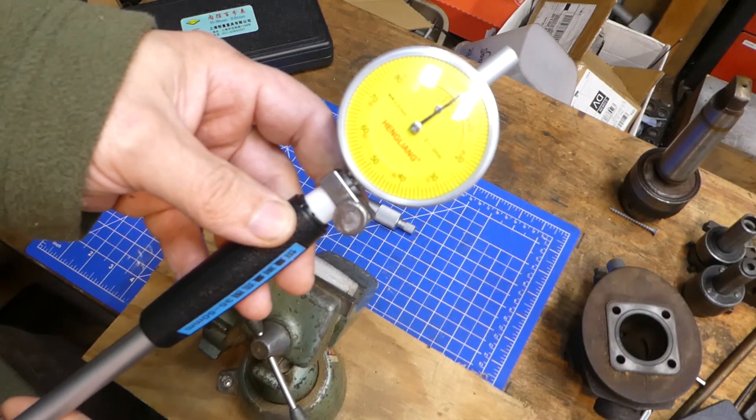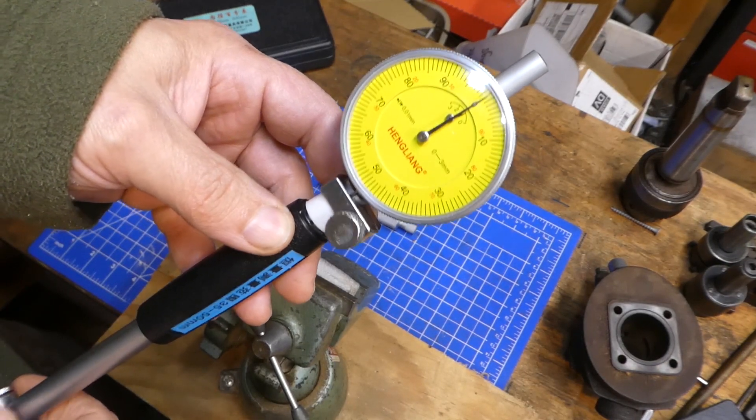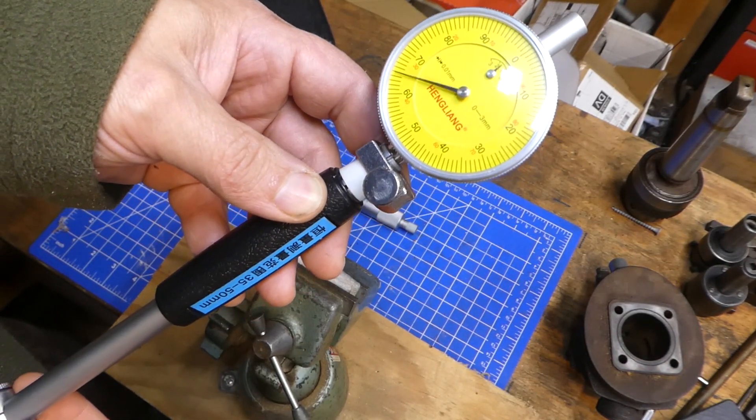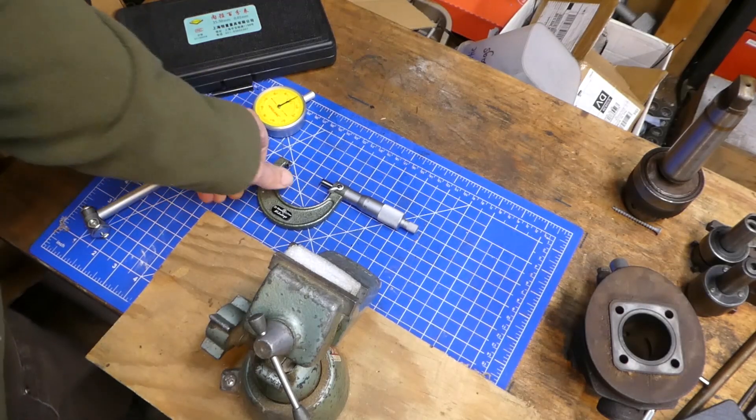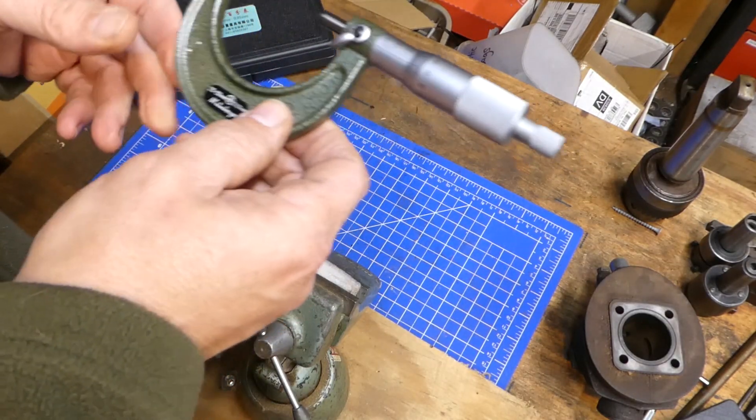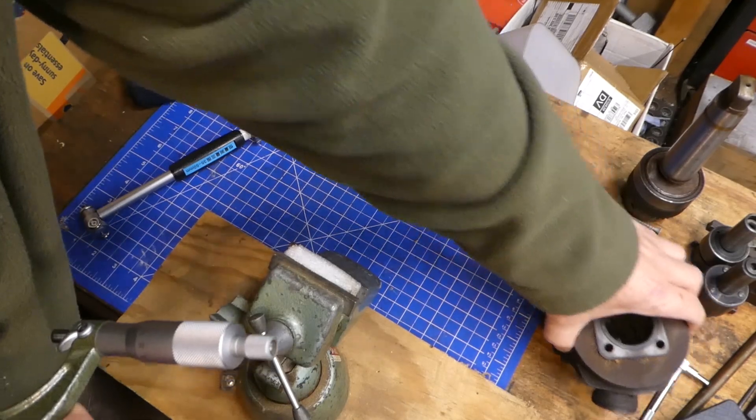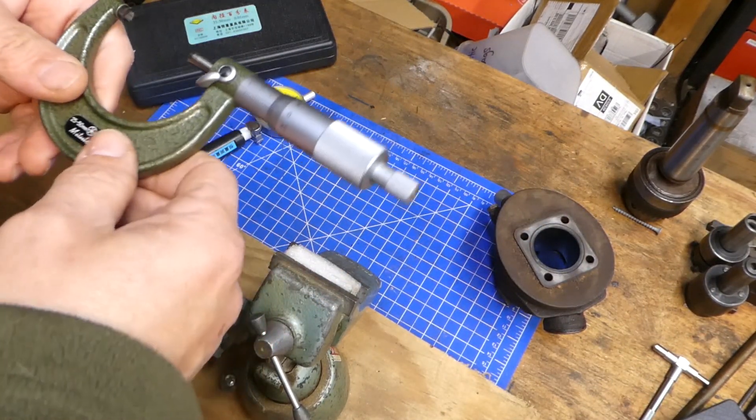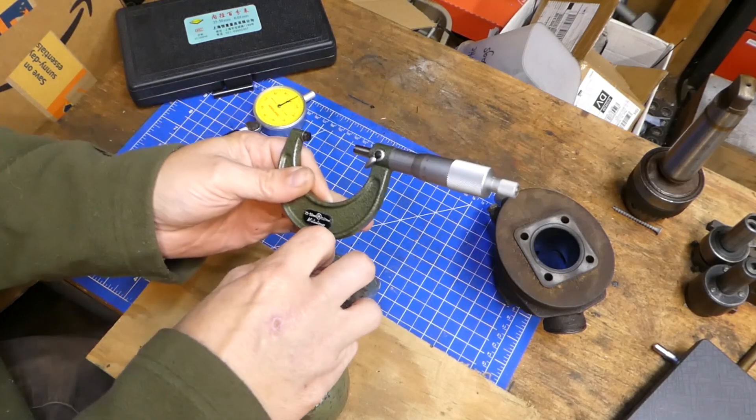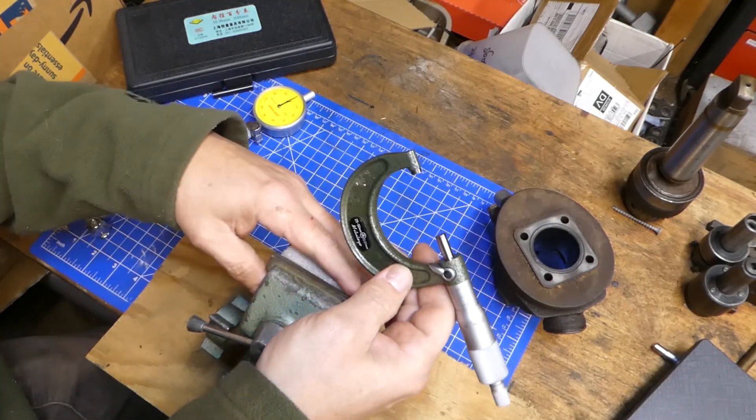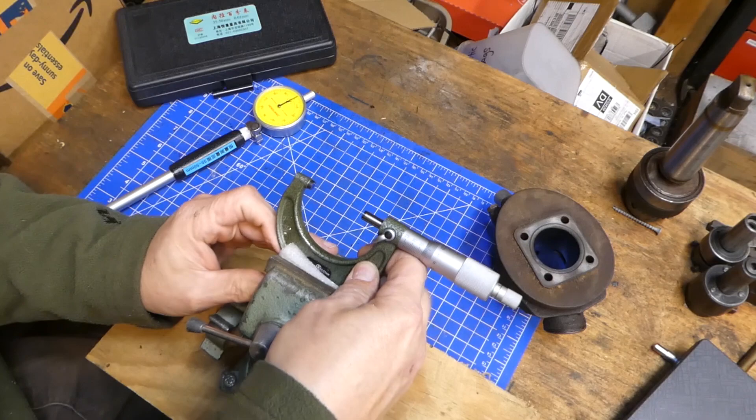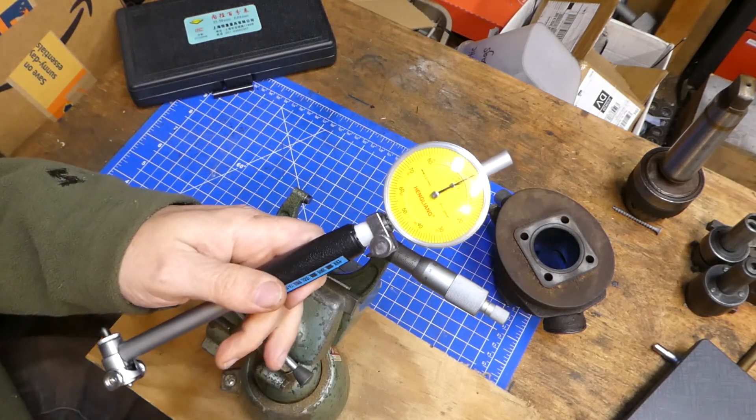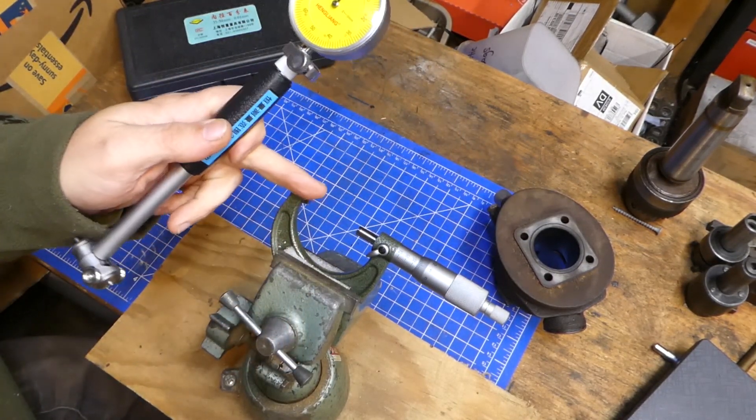So I set the indicator into the bore gauge and I've preloaded it by one millimeter. I've got my micrometer here. It is set to 38 millimeter, which is what I believe this bore is going to be. It's going to be close to 38 millimeters. I'm going to put it in this pan of ice because it's the closest thing I have to a micrometer stand.